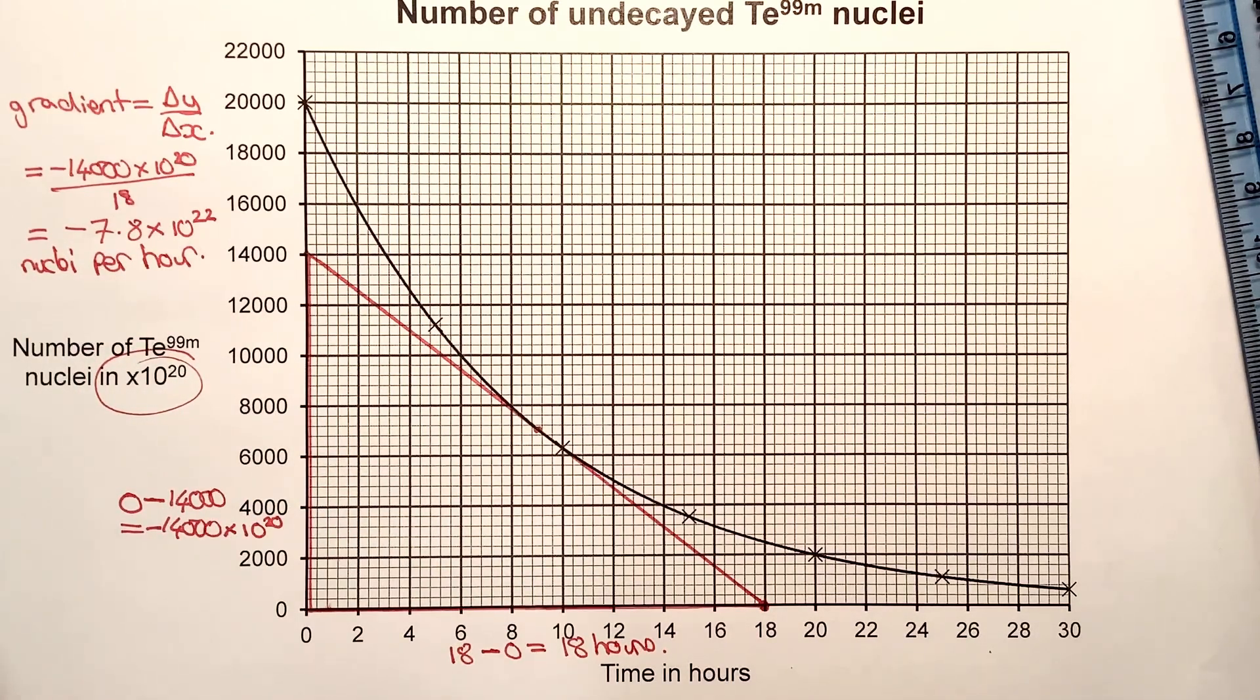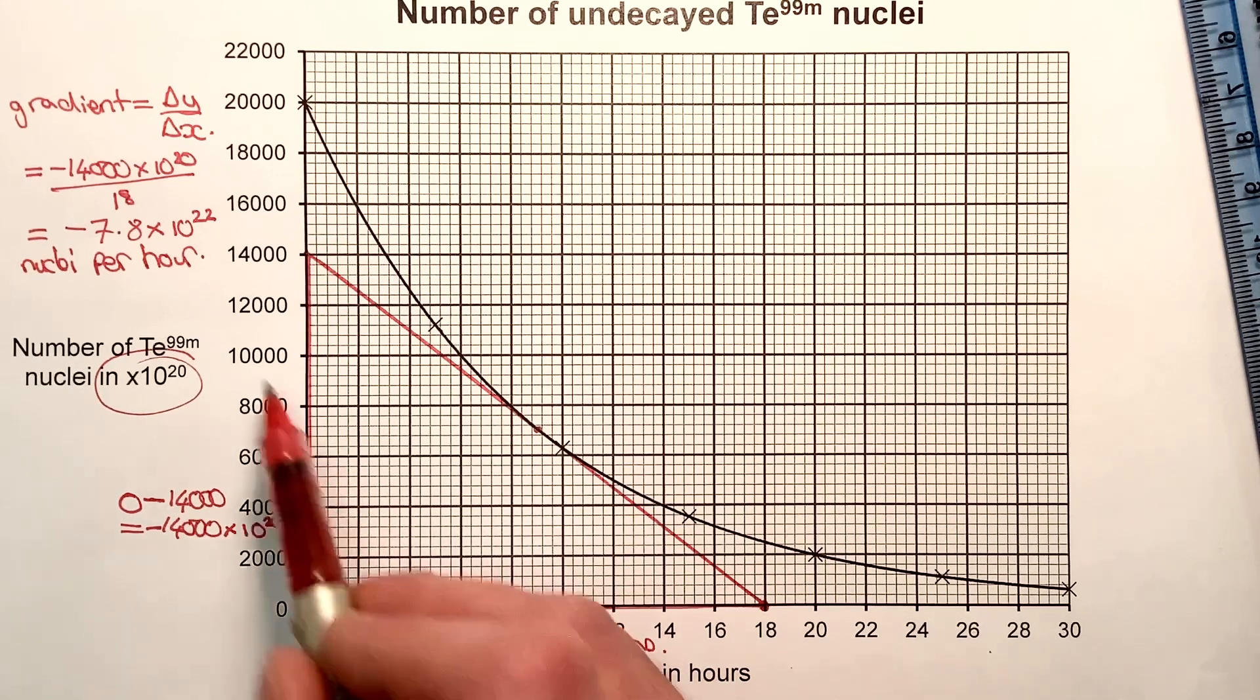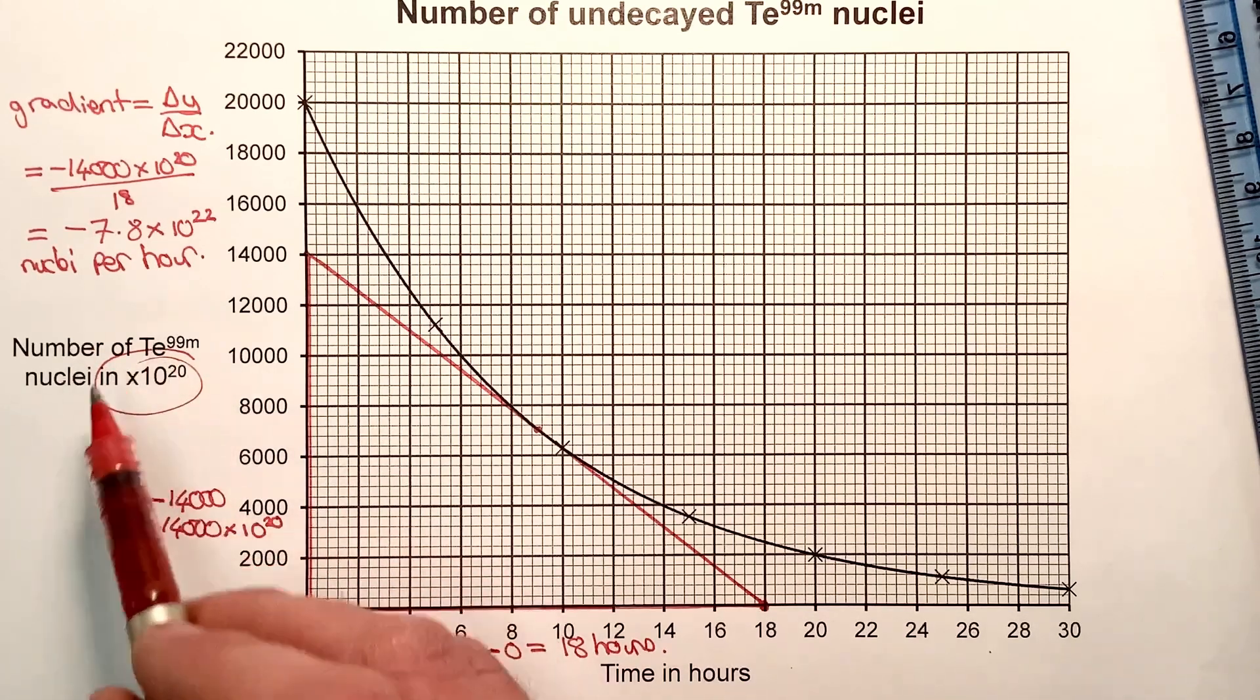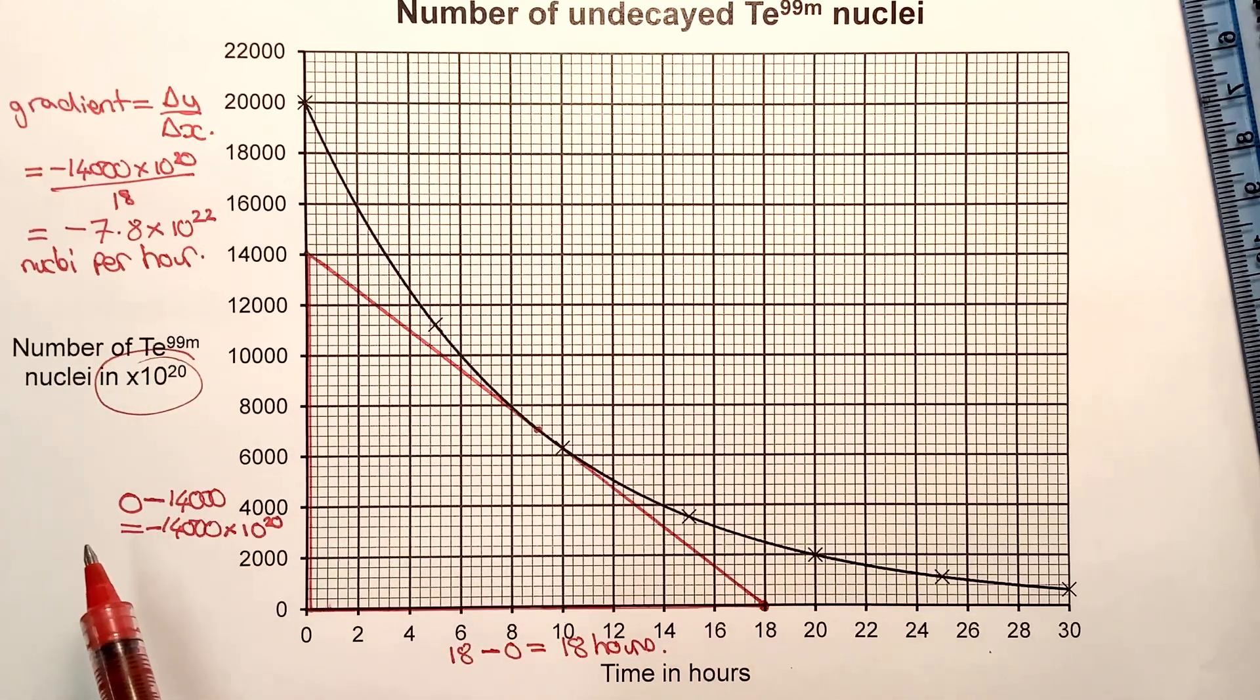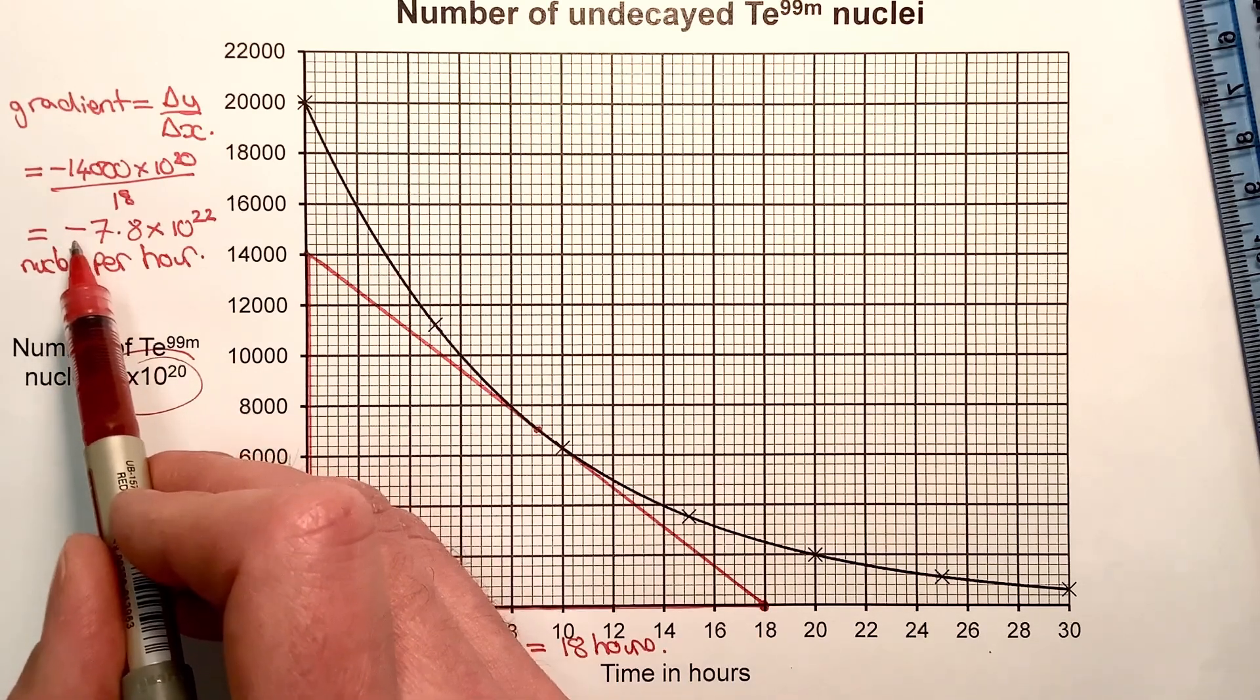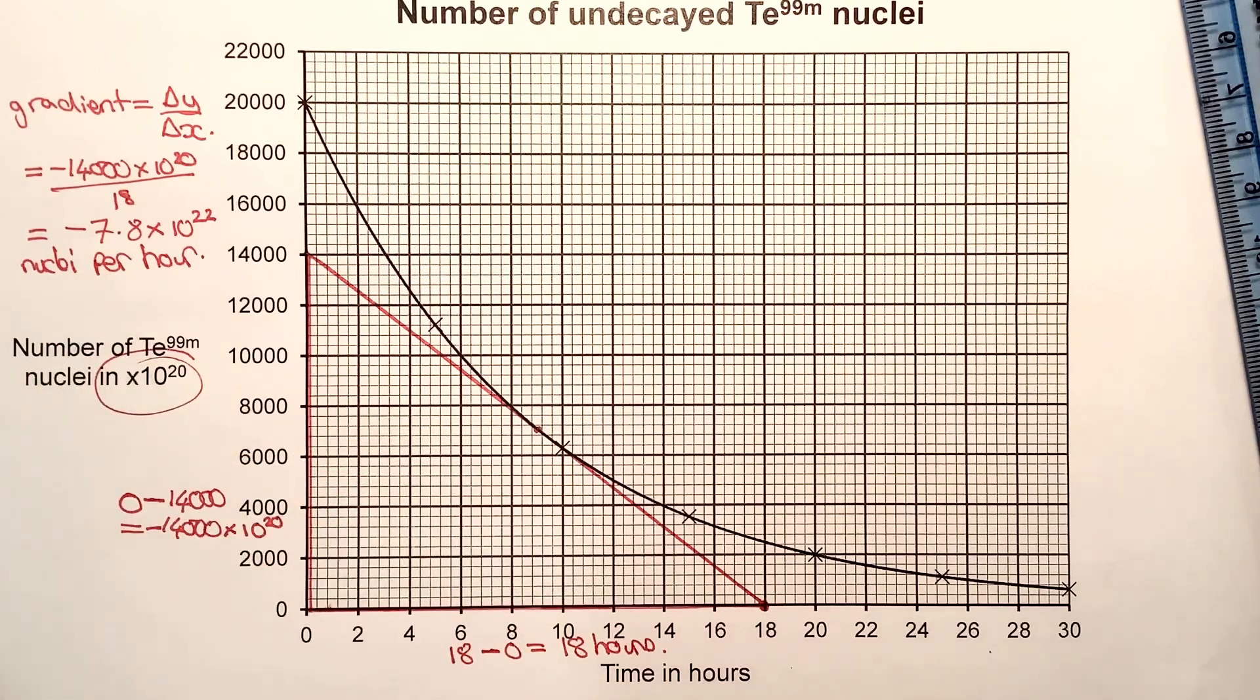To understand the meaning of this, whenever you have a graph with time and you calculate the gradient, it gives you the rate of change of whatever you have here. I've got the rate of change of nuclei, and because it's negative, the number of nuclei is going down. So if I took away the minus sign, it would give me the rate of decay of nuclei.